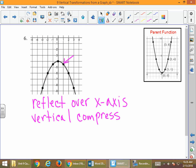Vertical is always affecting the y value. Originally, in our parent function, we went two spaces to the right and four up. Well, how does four relate to two now? It's half.